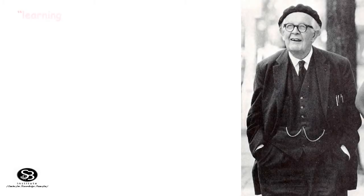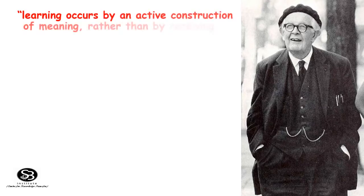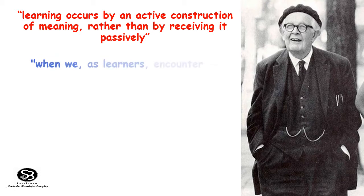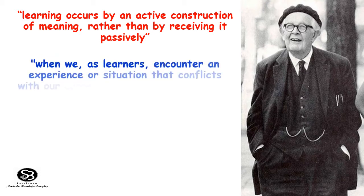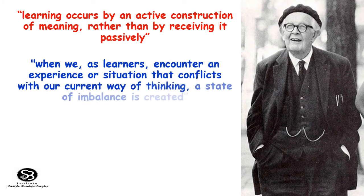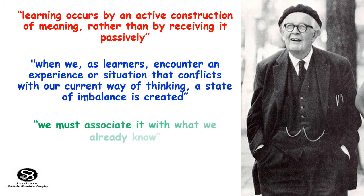Piaget believed learning occurs by an active construction of meaning rather than by receiving it passively. He states that when we as learners encounter an experience or situation that conflicts with our current way of thinking, a state of imbalance is created. We must alter our thinking to restore equilibrium or balance. To do this, we must associate it with what we already know. The developing child must build cognitive structures through the use of mental maps and concept maps.